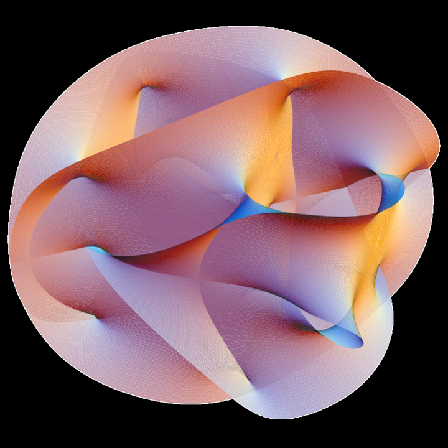In theoretical physics, type II string theory is a unified term that includes both type IIA strings and type IIB strings theories. Type II string theory accounts for two of the five consistent superstring theories in 10 dimensions.